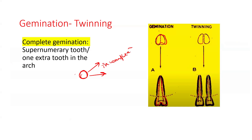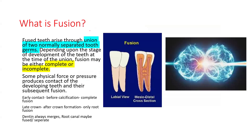If there is complete division — that is, it completely divides giving rise to two identical teeth — that is called twinning. So complete gemination giving rise to one extra tooth in the arch, or a supernumerary tooth, is called twinning.